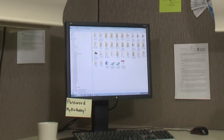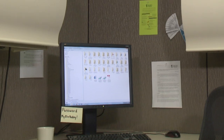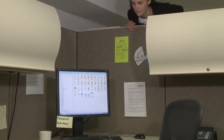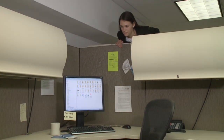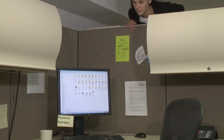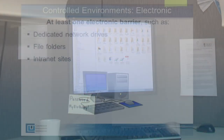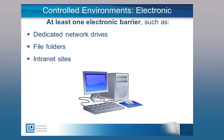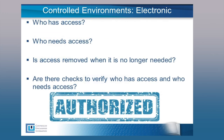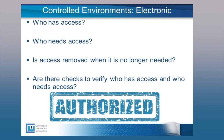Here is an employee's workstation. There are several red flags that indicate that CUI is not being properly protected. So how can we protect CUI that is electronically stored? Similar to the protections in the physical world, the CUI program requires that some barrier or compartmentalization exists to prevent unauthorized users from accessing electronic CUI. These barriers should limit access only to those with a lawful government purpose, and include dedicated network drives, file folders, or intranet sites. In the electronic environment, ask yourself: who has access? Who needs access? Is access removed when it is no longer needed? What happens when an individual transfers to another division within the organization — is their access removed? Are there checks to verify who has access and who needs access?